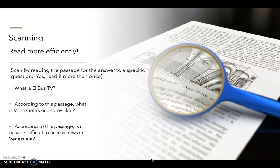Now that we are masters of skimming, let's check out an even greater technique: scanning. Scanning can be used in order to read much more efficiently. It's not as deep as a deep analysis, but what you want to achieve through scanning is reading to answer specific questions. In other words, if you want to figure out what exactly El Bus TV is, you can ask yourself this question, scan the passage, and read it in order to answer that question. Here we have three questions, so we're going to read it three times — each time looking for the answer to a specific question.